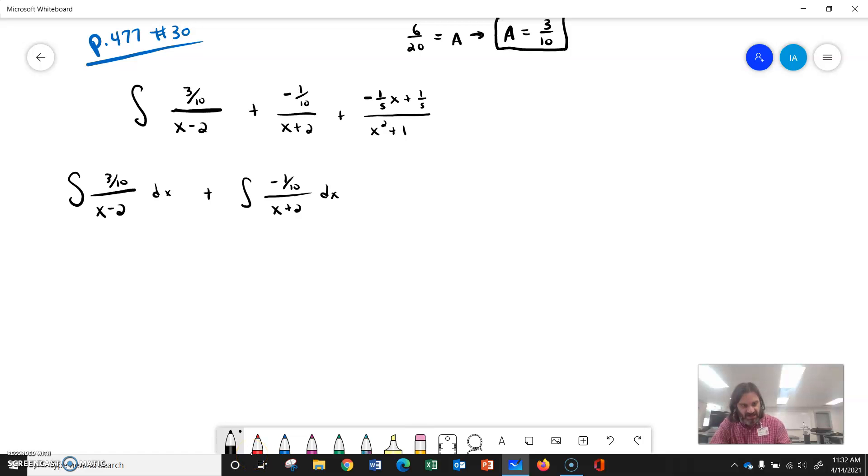Okay, and then the last one was negative 1 fifths plus 1 fifths over x squared plus 1. I'm going to break that into two separate fractions,